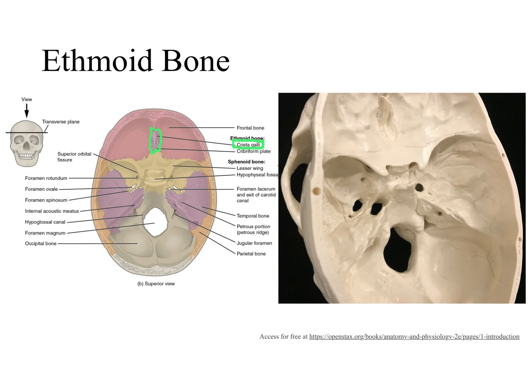On either side of the crista galli we see a plate that has several little holes in it. This plate is called the cribriform plate, and all these little holes serve as passageways for cranial nerve number one, the olfactory nerve.